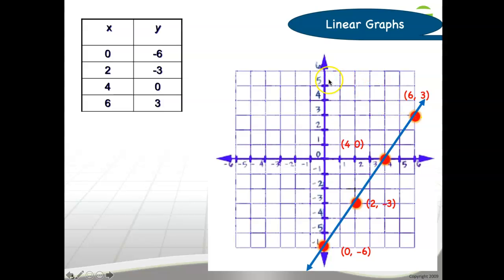Now that you have plotted four points, all you have to do is connect the points by drawing a long line. Now you have represented this input-output table in another way, which is making a graph.